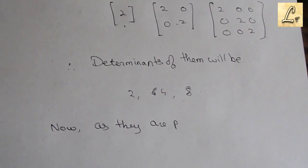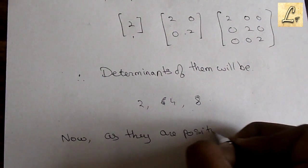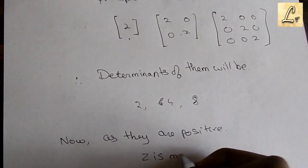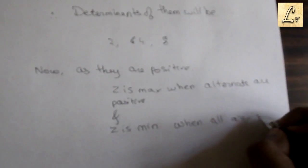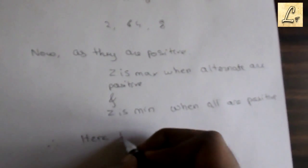Now here they are all positive. When all of them are alternating in sign, it is maxima, and when they are all positive, it is minima. So since all of them are positive, it is minima.